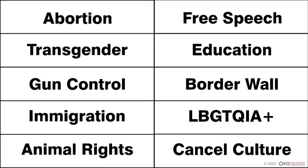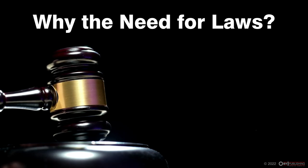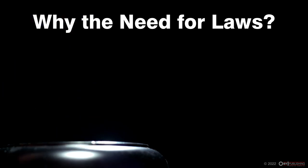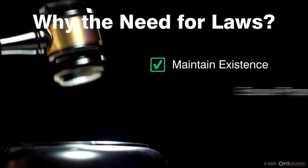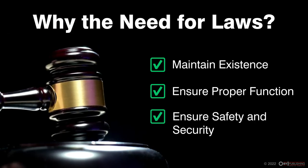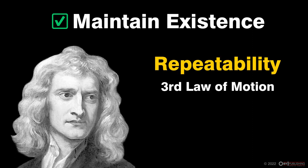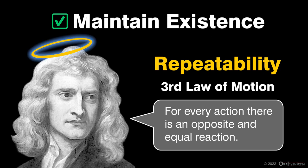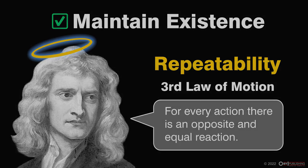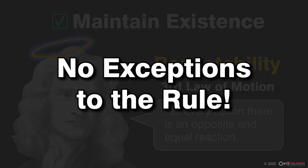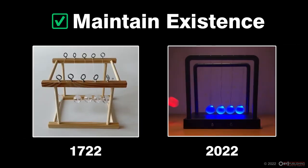So why is there a need for any laws in the first place? Regardless of how things change over time, the reason why any law exists is to ensure the ongoing existence, function, and security of whatever is on the business end of the law. Laws perform several functions. Laws ensure repeatability. Newton's Third Law of Motion states: for every action there is an opposite and equal reaction. The reason why we declare it a law is because there are no exceptions to the rule. Observable repeatability ensures that Newton's law will be just as applicable in the future as it has been in the past.